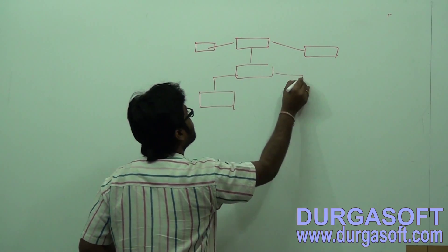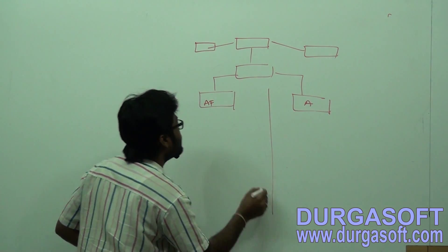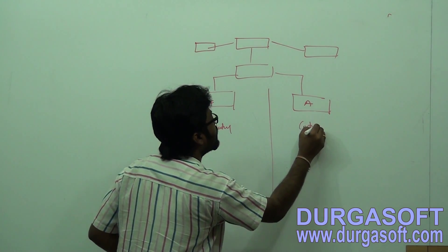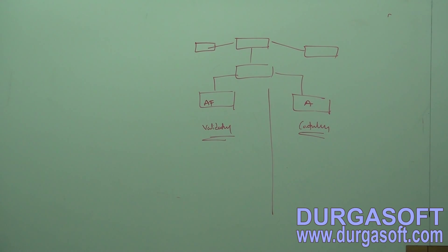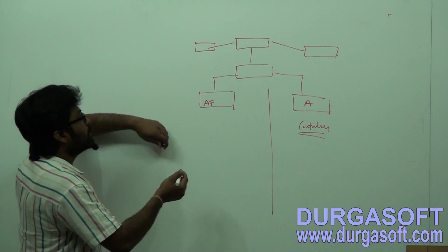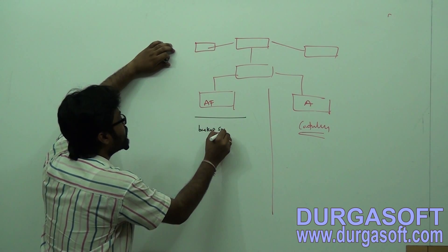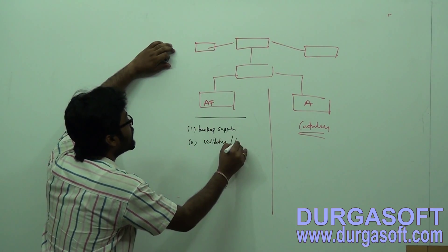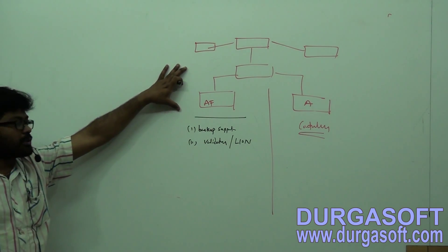We should know about ActionForm classes and Action classes. These are validation classes on the left side and controller classes on the right side. This ActionForm layer needs to provide backup support first, and then validation support, along with localization - based on country or state it needs to execute validations. So localization support also it needs to provide here.